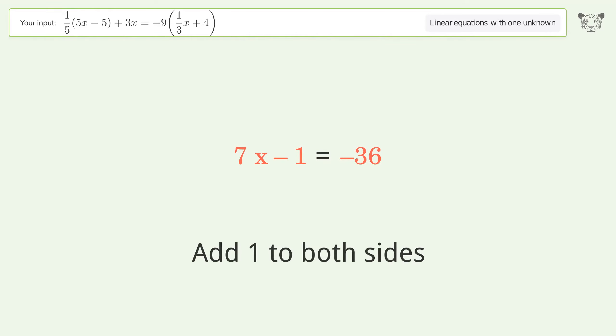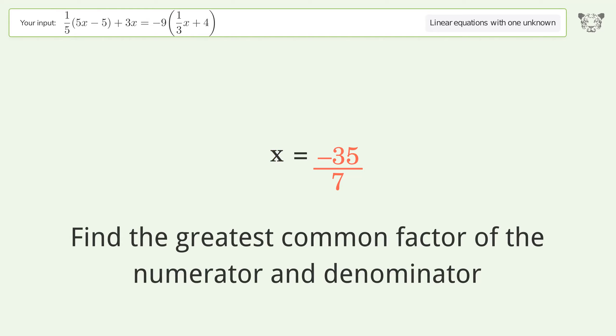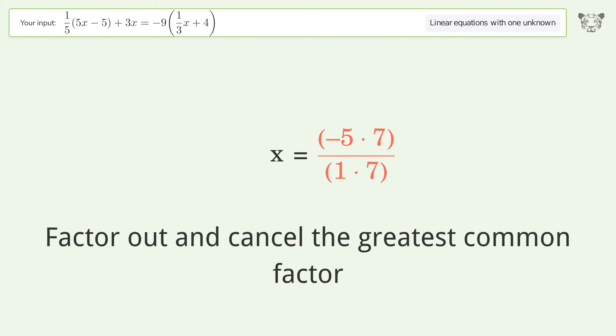Add 1 to each side of the equation. Factor out and cancel the greatest common factor.